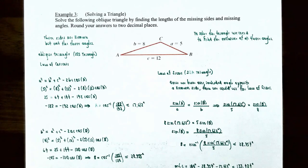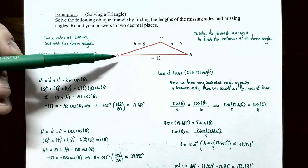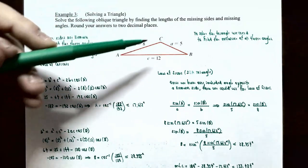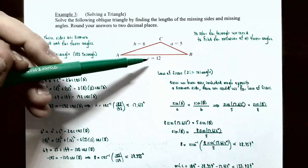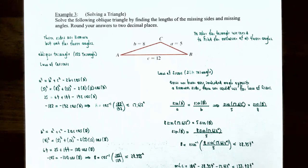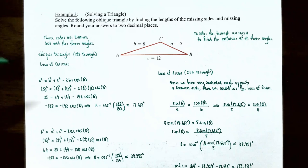Example three: solve the following oblique triangle. We have side a = 5, side b = 8, side c = 12, but all three angles are unknown. This is an SSS triangle, so we must use the law of cosines. Let's find angle A first.